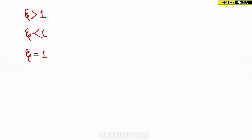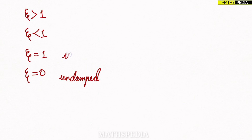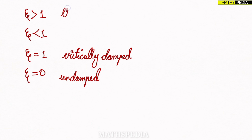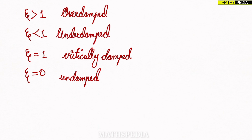There are four conditions based on the zeta value. When zeta equals zero, it is an undamped system. When zeta equals one, it is a critically damped system. When zeta is greater than one, it is overdamped. When zeta is less than one, it is underdamped. You must remember these four conditions to find the type of damping.